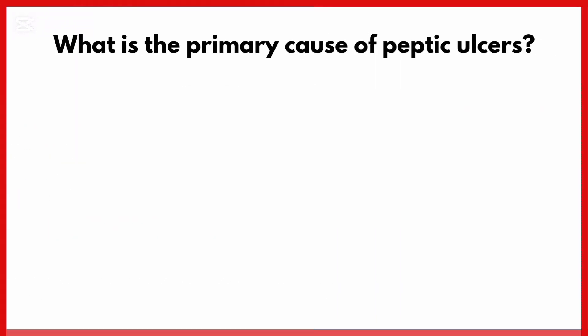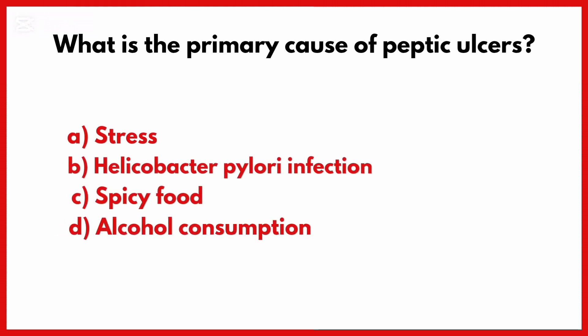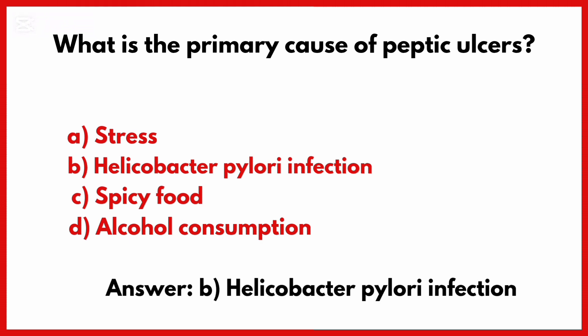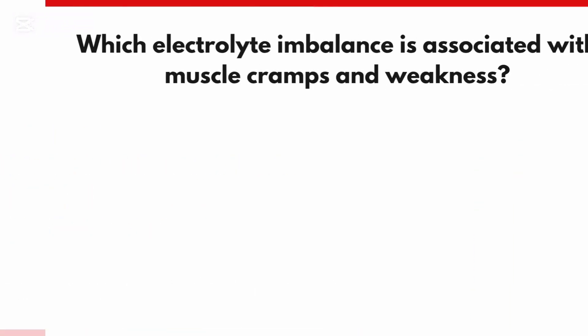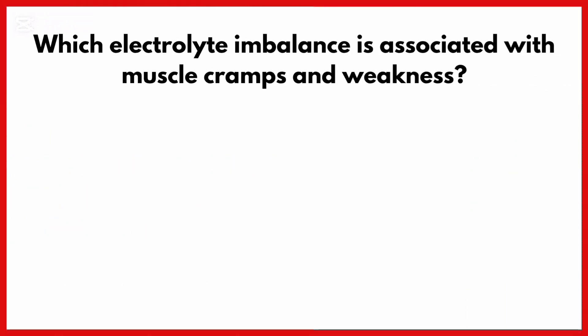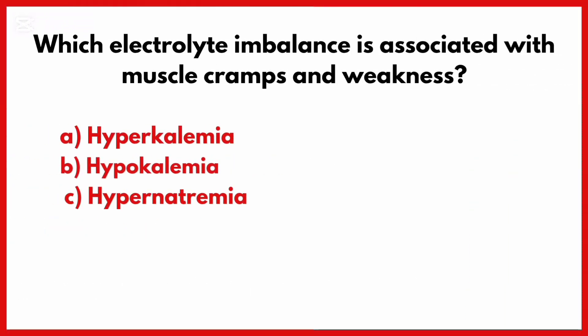What is the primary cause of peptic ulcers? Correct answer is option B: Helicobacter pylori infection. Which electrolyte imbalance is associated with muscle cramps and weakness?